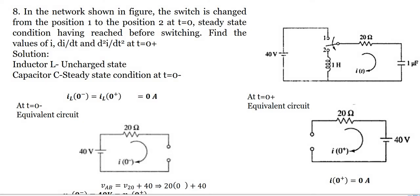In the network shown in the figure, the switch is changed from position 1 to 2 at t=0, and steady state condition has been reached before switching. Find the value of i, di/dt, and d²i/dt² at t=0 plus.